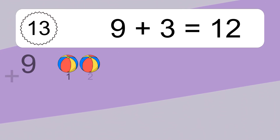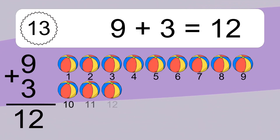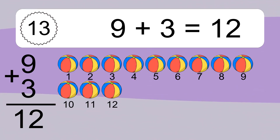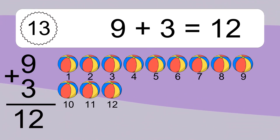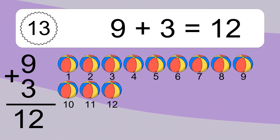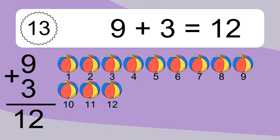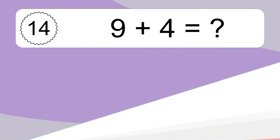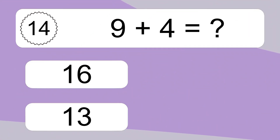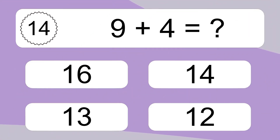9 plus 3 equals 12. Let's count it. 1, 2, 3, 4, 5, 6, 7, 8, 9, 10, 11, 12. 9 plus 4 equals what?